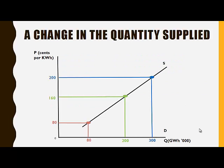Here we have a supply curve. When the price increases from 160 to 200 cents per kilowatt hour, an upward movement along the supply curve takes place. And when the price decreases from 160 to 80 cents per kilowatt hour, a downward movement along the supply curve takes place.